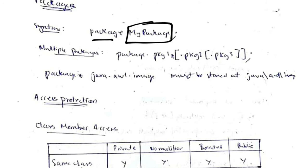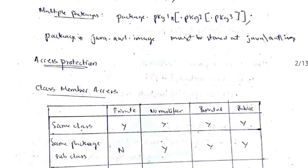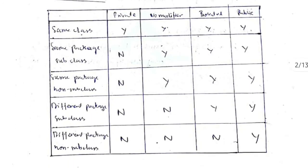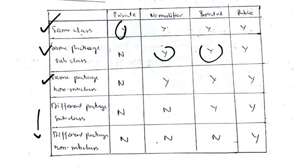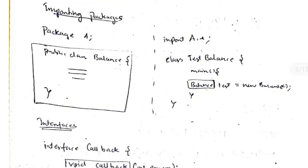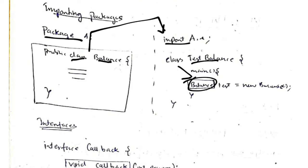The syntax for a package is the keyword 'package' followed by the package name. After declaring a package, you need to know about access specifiers — what objects and variables can be accessed in the same class, same package, subclass, and so on. This table shows what access is possible. If I define package A with a class Balance, I can import A and use the Balance class elsewhere in my program.